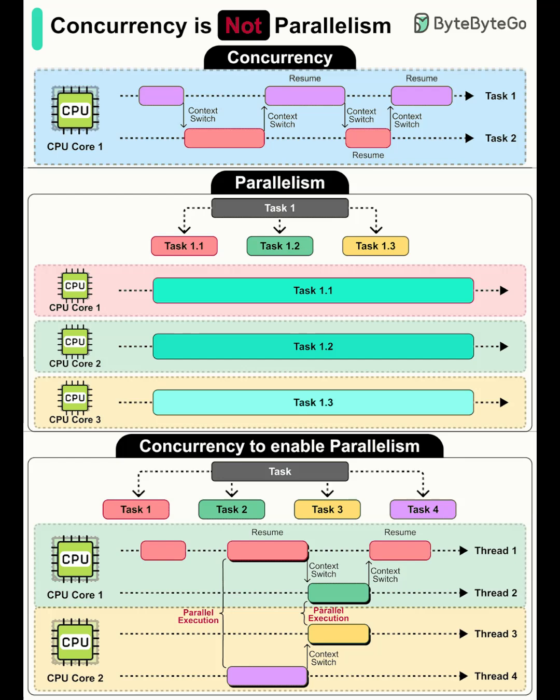Concurrency helps many tasks make progress by sharing time efficiently, even on a single core. Parallelism speeds up computation by running tasks simultaneously across multiple cores. Understand the difference, use the right tool for the job, and combine them thoughtfully to build faster, more reliable applications.